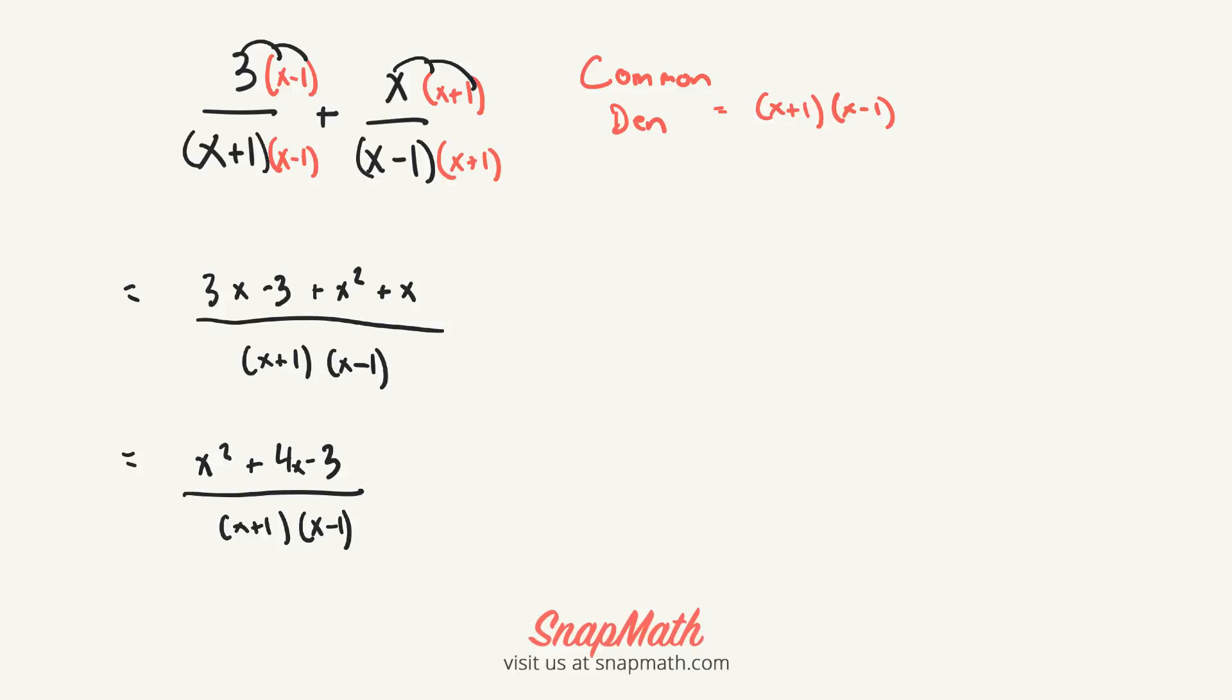Now what you want to do is try to factor the top to see if you can cross out any binomials. But when you try factoring the top, you have negative 3 here, and there's no combination that will multiply to negative 3 and get you a positive 4, so it's not factorable.